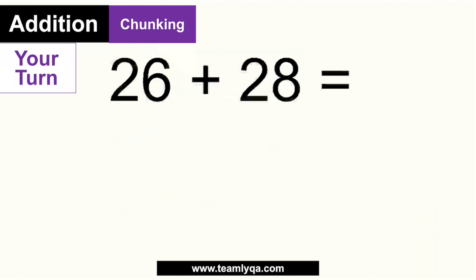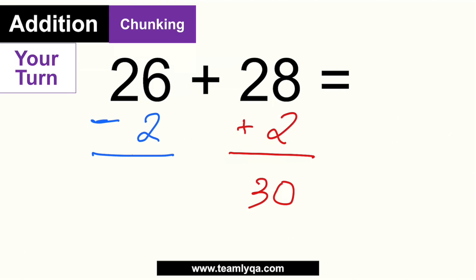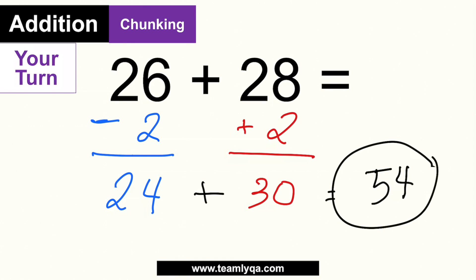Let's see how you did: we have 26 and 28. The idea is to make one of these end in zero. Since 28 is just 2 away from 30, I take that 2 from 26, giving me 24. Thirty plus 24 equals 54 — the same answer we got using Split and Solve.